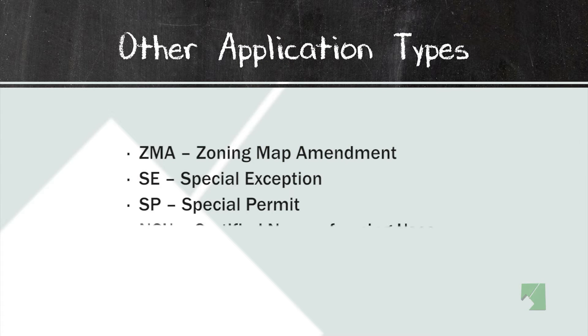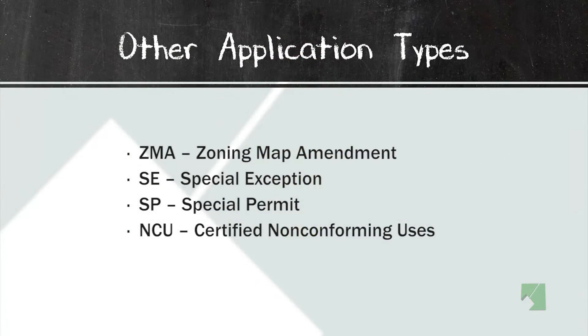We have special permits and certified nonconforming uses. Nonconforming uses occur when the law changes but a property or use is already in existence. A nonconforming use is a legal use, but if it ceases to exist, then that nonconforming legal use can be lost.